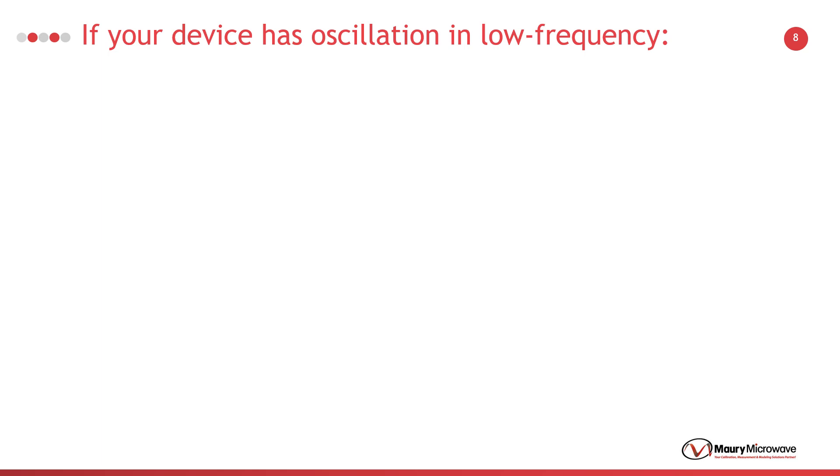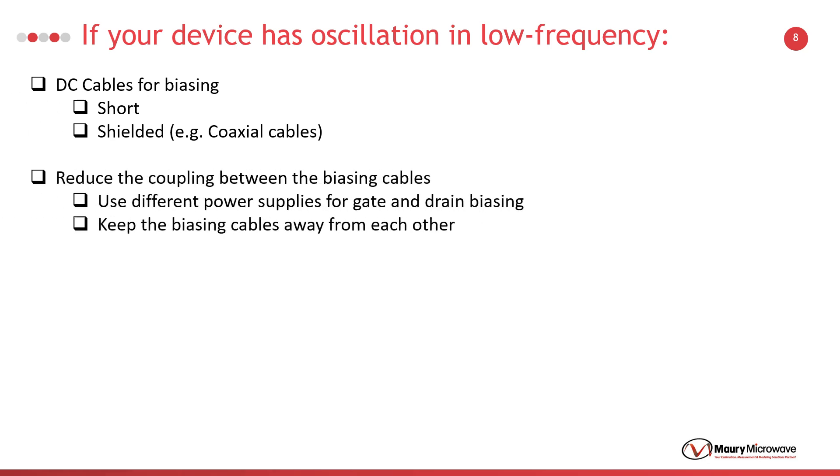If there is an oscillation in the low frequency region, there are some easy and effective solutions that can be applied to prevent this oscillation. Use short and shielded cables for biasing. Ensure that there is no coupling between the input and output biasing networks. Use isolated power supplies. Change the bias tees. Try different brands or models as they could be causing a resonance in the low frequency region due to its internal components.